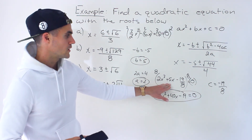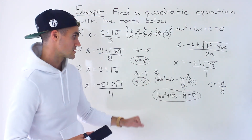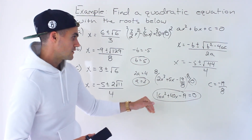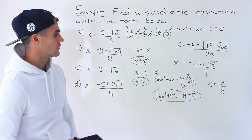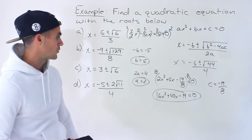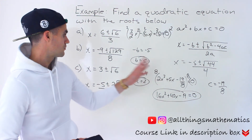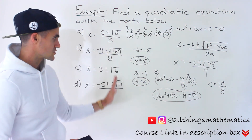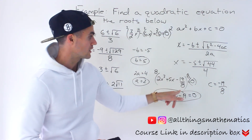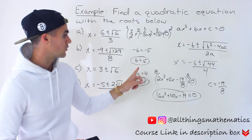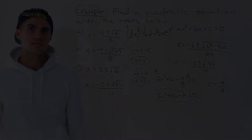Whether you use the form with fractions or without depends on whether your teacher allows fractions. If not, just multiply by the lowest common denominator and you'll have no fractions left. Personally, I take the solutions, write them beside the quadratic formula, match everything up, and solve for a, b, and c.